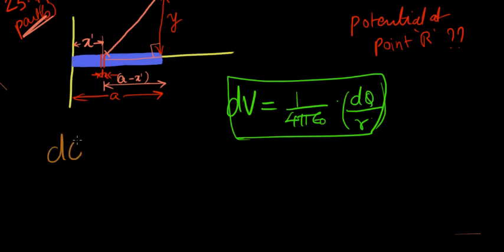Here, dq, again from part A, is q times dx prime over A. We substitute that here, and for R, what do we get?